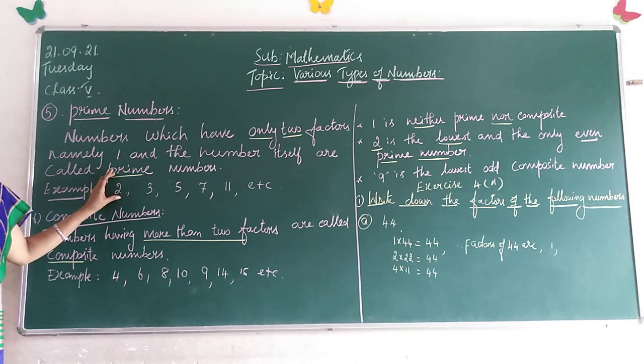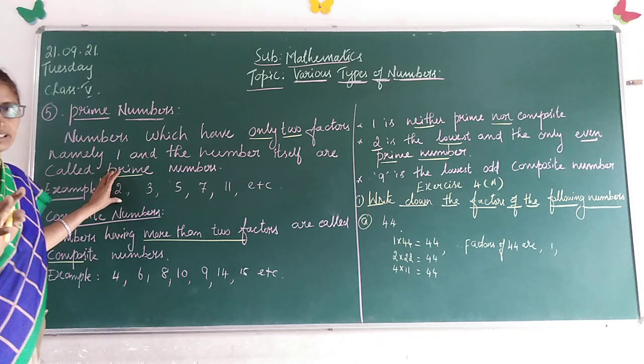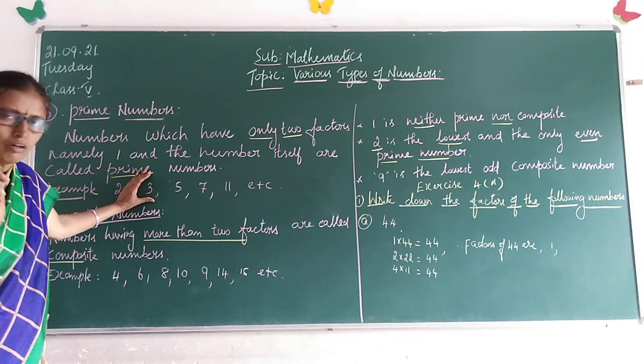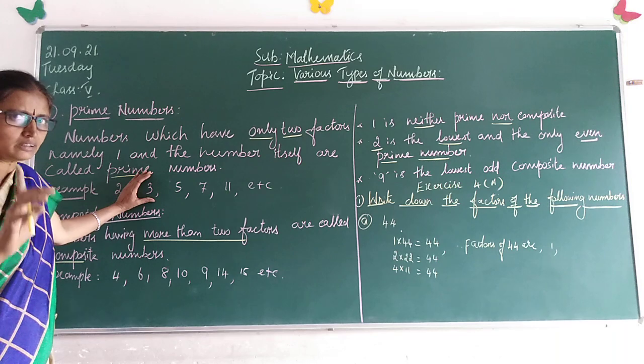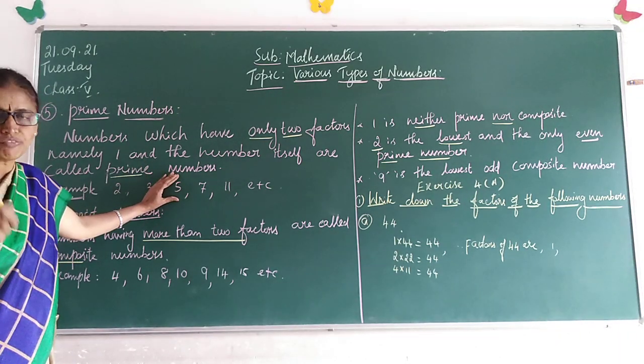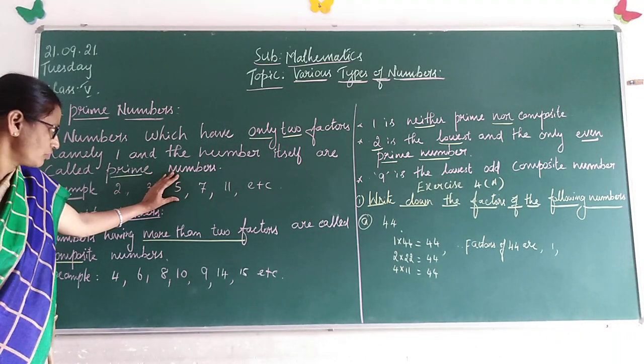For example, if you take 2, 1 and 2 are the factors of 2. For 3, 1 and 3 are the factors. For 5, 1 and 5 are the factors.